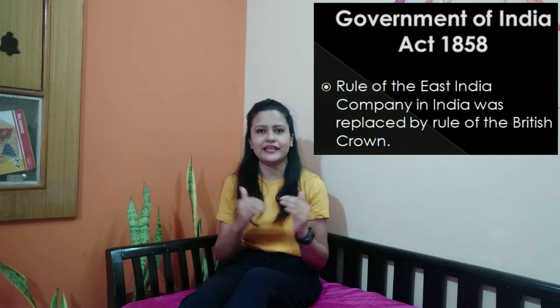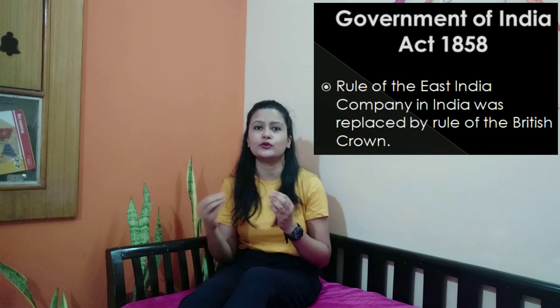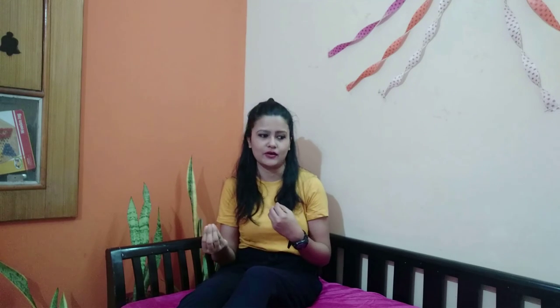Under the Government of India Act 1858, the rule of the East India Company in India was replaced by the rule of the British Crown, and the Secretary of State was given the power to exercise the powers of the British Crown.